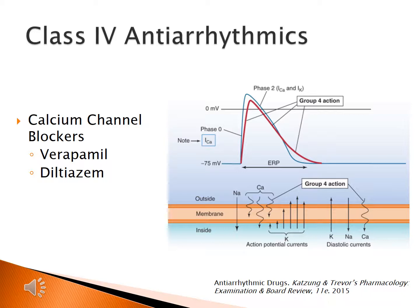Moving on to our class 4 antiarrhythmic medications, our calcium channel blockers — we would primarily use verapamil and diltiazem. These medications work at calcium-dependent cardiac cells in the AV node. By blocking calcium channels, we reduce the inward calcium current during the action potential and during phase 4. As a result, conduction velocity is slowed through the AV node and the refractory period is prolonged.